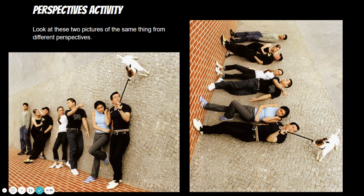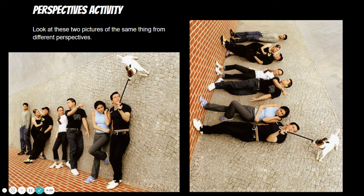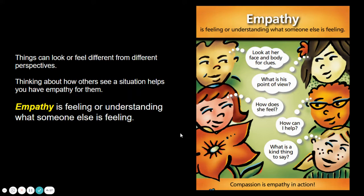Now look at the photo on the left. Doesn't it look like that dog is walking up and down the wall? Then look at the exact same photo but turned a different way. Now it makes sense — the dog is just walking on the pavement. That's a fun way to see how different perspectives show different ways of looking at the exact same thing.